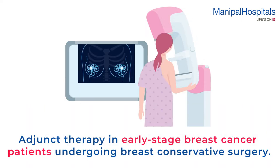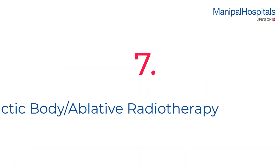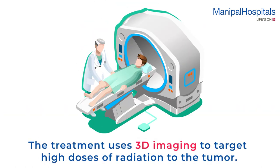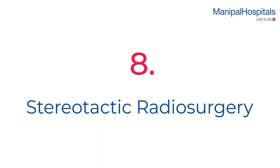Number six: hypofractionated radiation treatment. It is used as an adjunct therapy in early-stage breast cancer patients undergoing breast conservative surgery. Number seven: stereotactic body ablative radiotherapy. This treatment uses 3D imaging to target high doses of radiation to the tumor in a few treatment days.